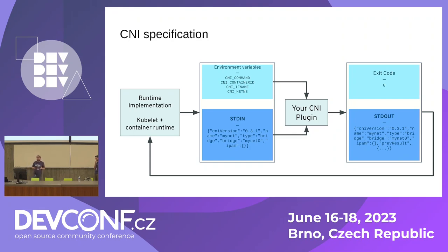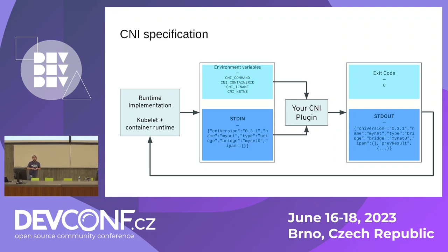Multus allows you to use a CRD — finally, this starts to look like something Kubernetes-native. But in the end, this CRD uses a Kubernetes object called NetworkAttachmentDefinition, which is just a wrapper for the old-style JSON. This is something we would like to change in the upcoming CNI 2.0. So if you get anything from this: Kubernetes native only allows a single interface per pod; use Multus and you get several.